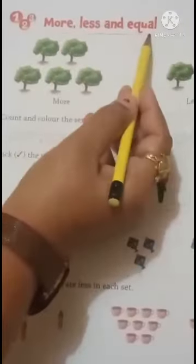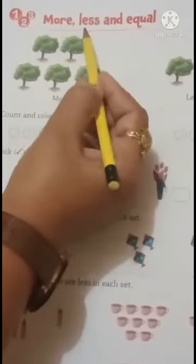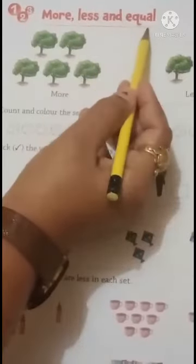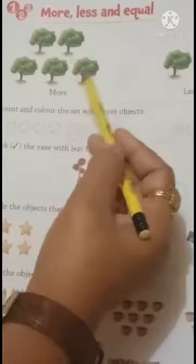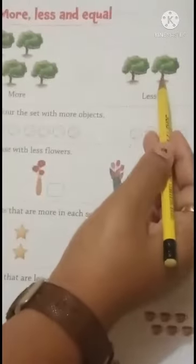More means jada, less means come, and equal means beraber. See children, this is more tree and this is less tree.